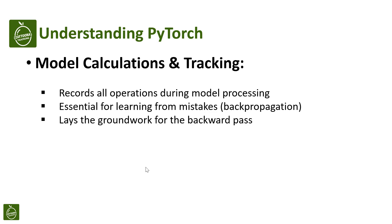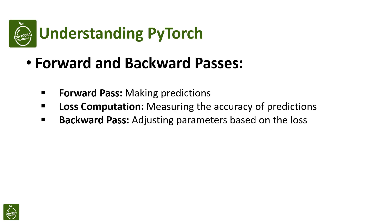In PyTorch, when our model works with data, it keeps a careful record of all the operations it does. This tracking is like keeping notes for a big math problem. It is super important because it helps the model learn from its mistakes and get better during the backward pass, which is when our model makes its guesses and we calculate how wrong or right they are — that's the loss.